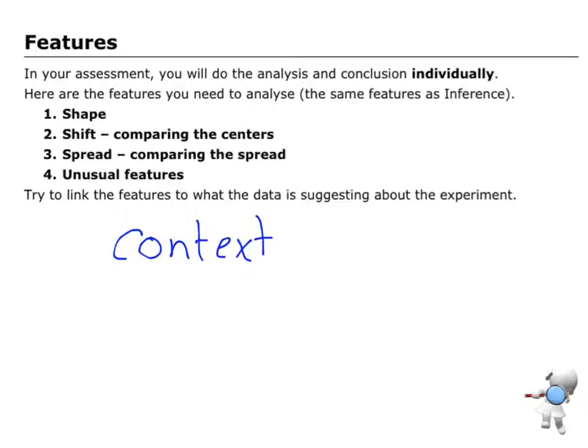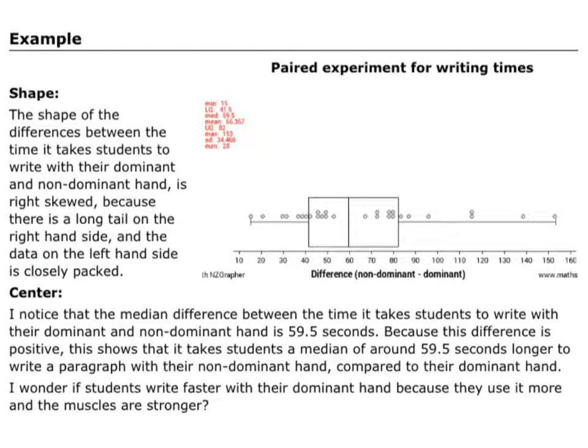So whatever this experiment is that I'm doing, I need to tell us about that. Not to say the median is 5, it needs to be very specific. So here's an example. We've got our writing times and we've got the dot plot.